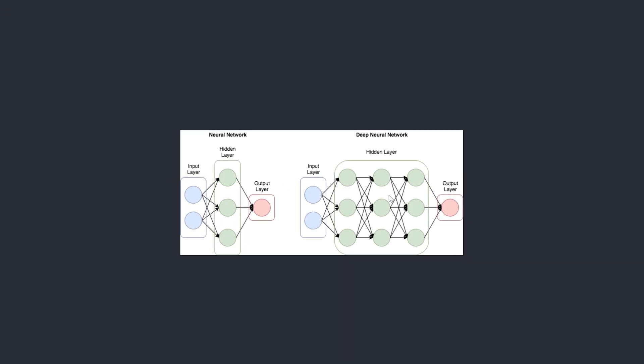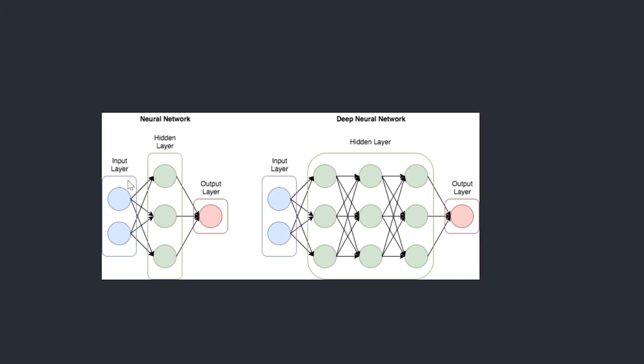In the first video of the series we looked at an image like this one where we had an input layer, a hidden layer, and an output layer. This, if you remember, was our neural network architecture.